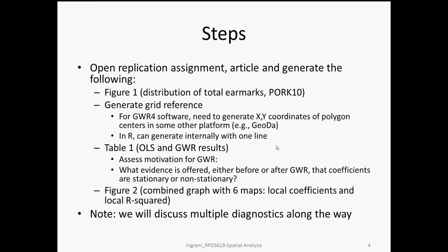If we're working in the standalone software package GWR4, we need to generate those XY coordinates in another environment. It just so happens that the authors included the XY coordinates in their replication data. But assuming we didn't have those, we want to understand how to get them in R. One nice advantage of R is that we can generate those coordinates internally with a single line. Then, with this grid reference object in hand, we want to reproduce the main results reported in Table 1 — the OLS results and the GWR results.